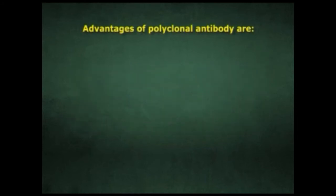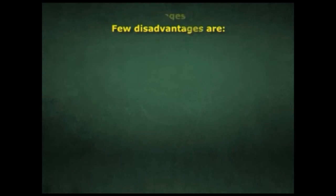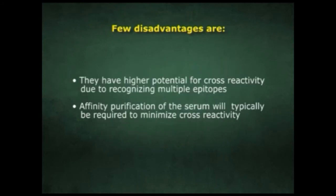There are certain advantages and disadvantages of polyclonal antibodies. Advantages include: they are quick to produce, as purified antibody will be ready to use in under 4 months; they are easy to store; and they have higher overall antibody affinity against antigen due to recognition of multiple epitopes. Disadvantages include higher potential for cross-reactivity due to recognizing multiple epitopes, and affinity purification of the serum will typically be required to minimize cross-reactivity.